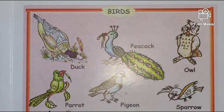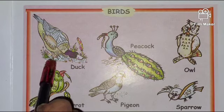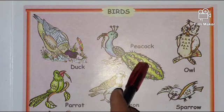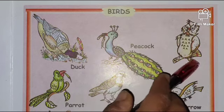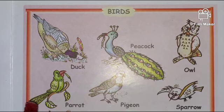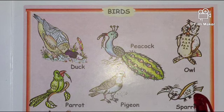Let's repeat all the birds' names. Say duck. Duck. Peacock. Peacock. Next is owl. Owl. Very good. Next is parrot. Parrot. Very good. Next is pigeon. Pigeon. Next is sparrow. Sparrow. Very good.